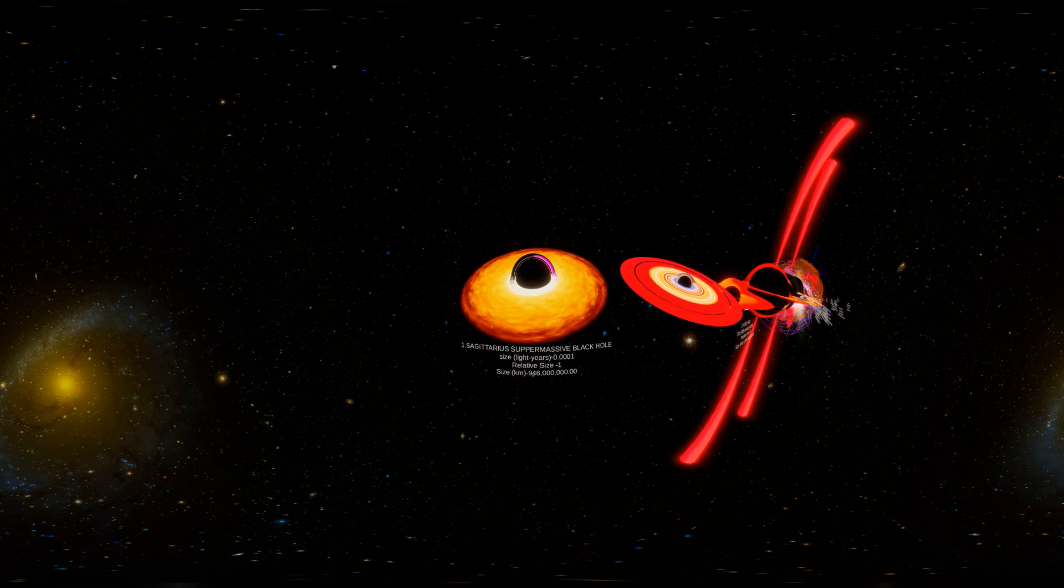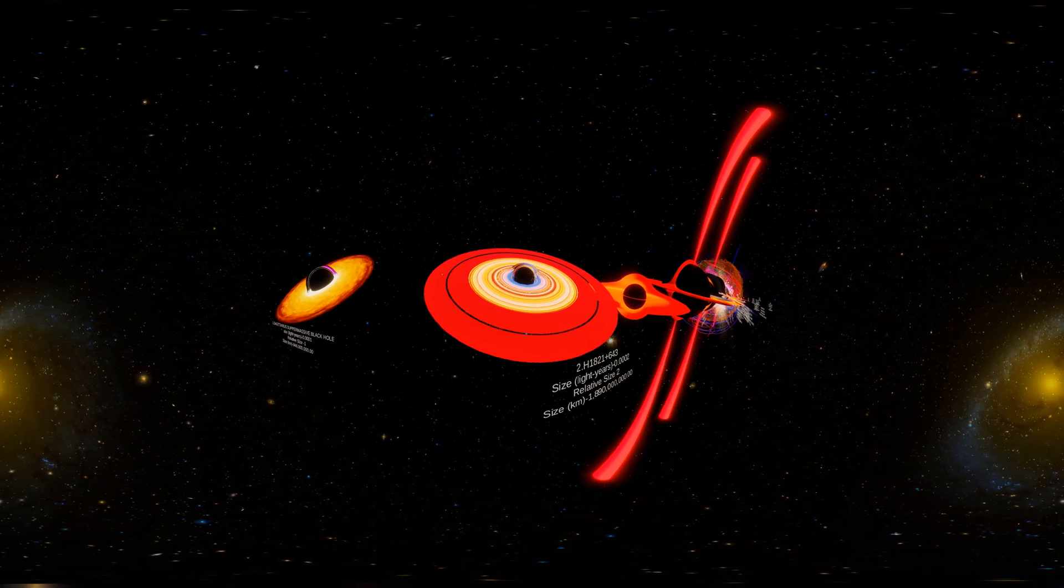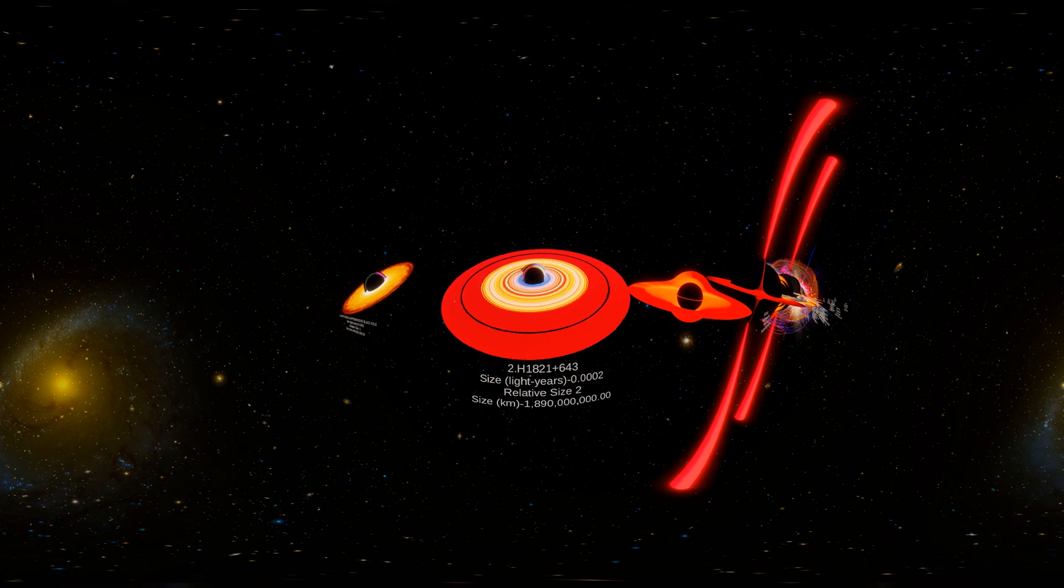Sagittarius Supermassive Black Hole, size light years 0.0001, H1821 plus 643, size light years 0.0002